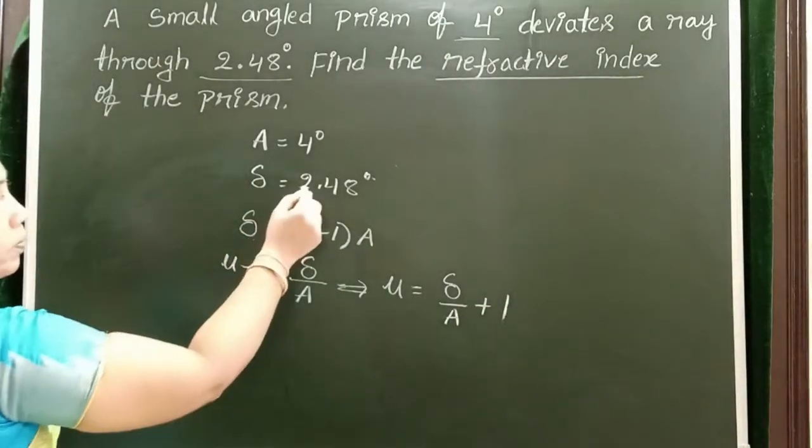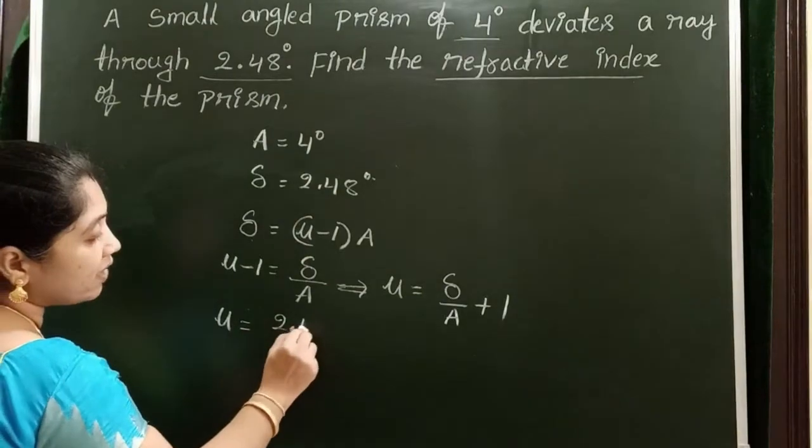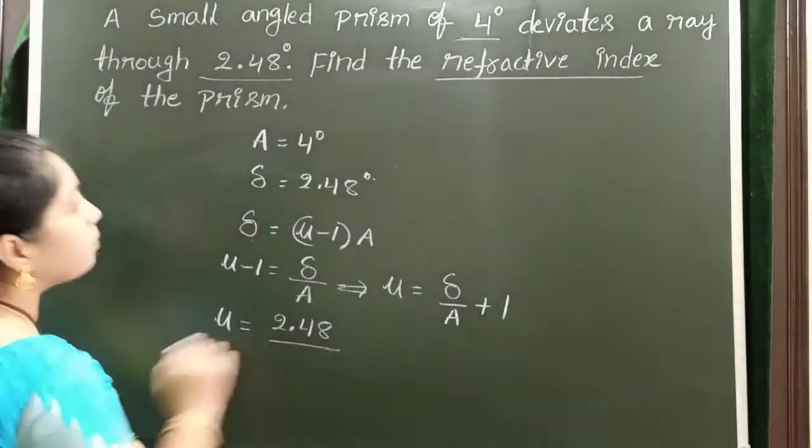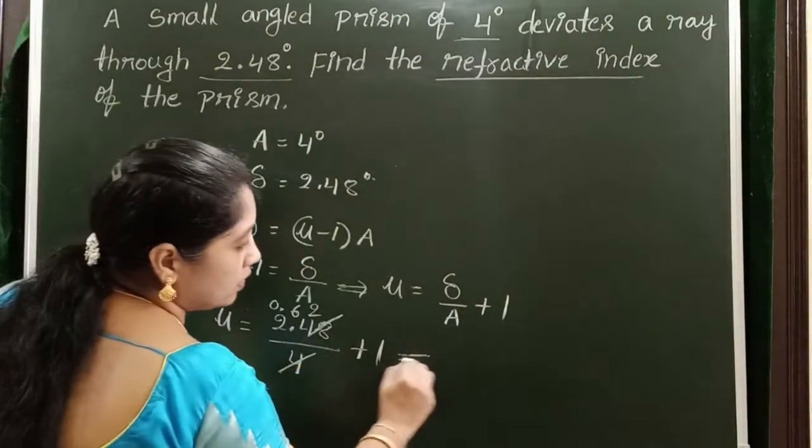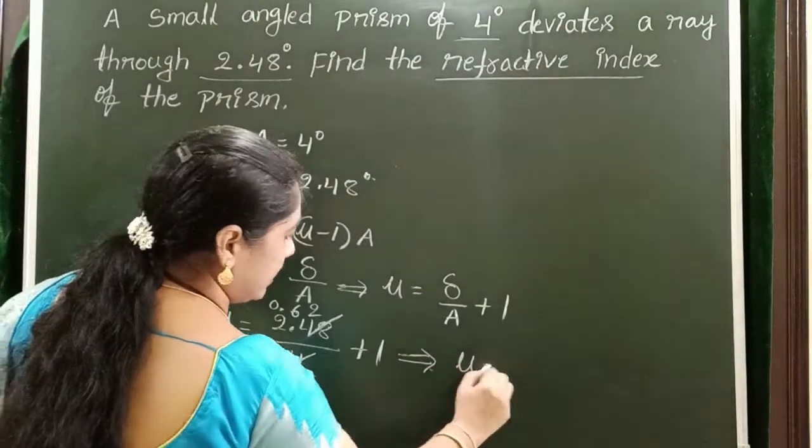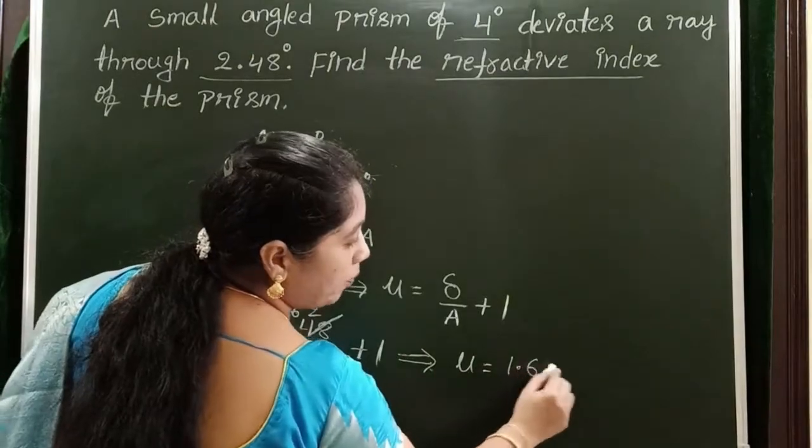Refractive index is equals to angle of deviation 2.48 by angle of the prism 4 plus 1. Refractive index is equals to 1.62.